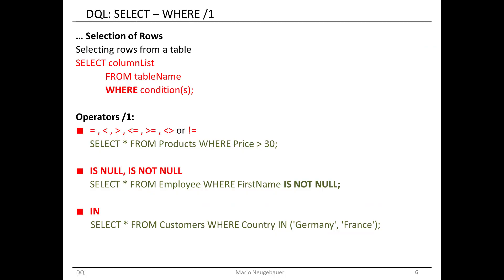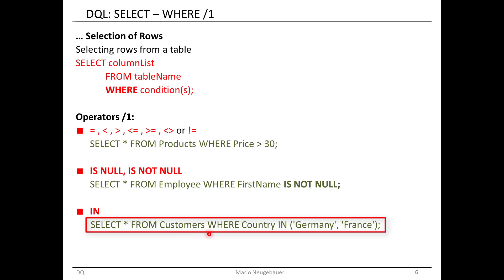Another possibility for expressing a condition is the IN clause. For example: SELECT * FROM customers WHERE country IN ('Germany', 'France'). This looks at the country column, and if the value is Germany or France, that row is selected. So you are selecting where country is in the set of Germany or France.